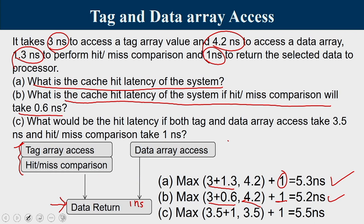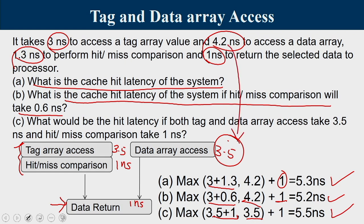For the third case, both tag and data array access take 3.5ns each, and hit/miss comparison takes 1ns. Left side: 3.5 + 1 = 4.5ns. Right side: 3.5ns. Left side is dominant at 4.5ns. Hit latency = 4.5 + 1 = 5.5ns. Even though data array access improved from 4.2 to 3.5ns, we get no benefit because the left side now takes more time.